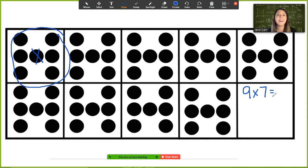If you just know that fact, awesome. If you don't know that fact, you probably know ten groups of seven. That's seventy, but I only have nine groups of seven. So I need to take away one seven. And that gets me back to sixty-three. Nine groups of seven is the same as sixty-three. So we have sixty-three dots here.